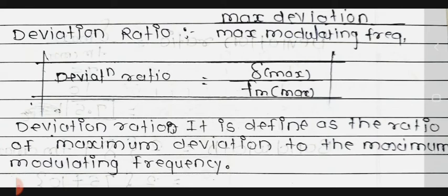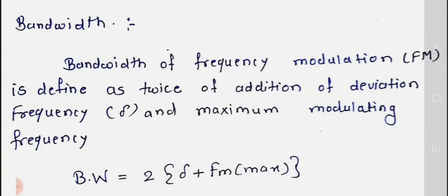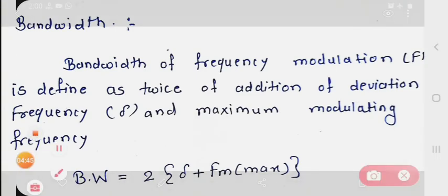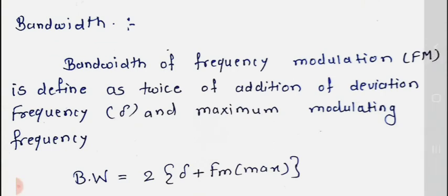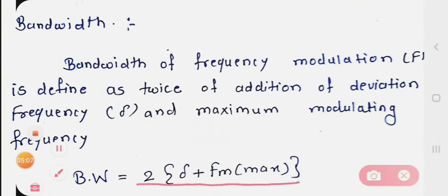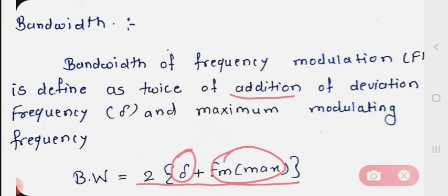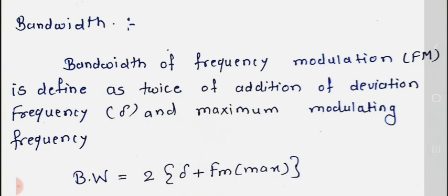Next is the bandwidth of frequency modulation. Bandwidth of frequency modulation is defined as twice the addition of the deviation frequency and the maximum modulating frequency. So the formula is BW = 2 × (Δf + fm_max). In this way we define the bandwidth. Today's topic ends here, thank you very much.